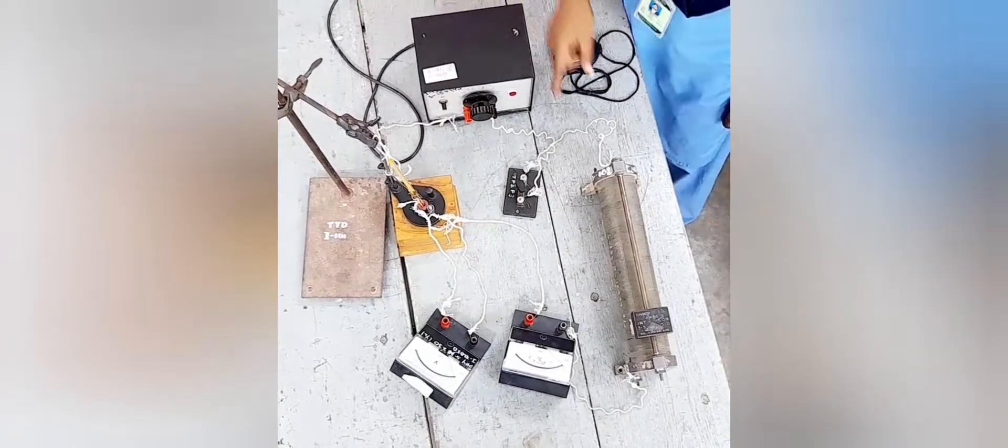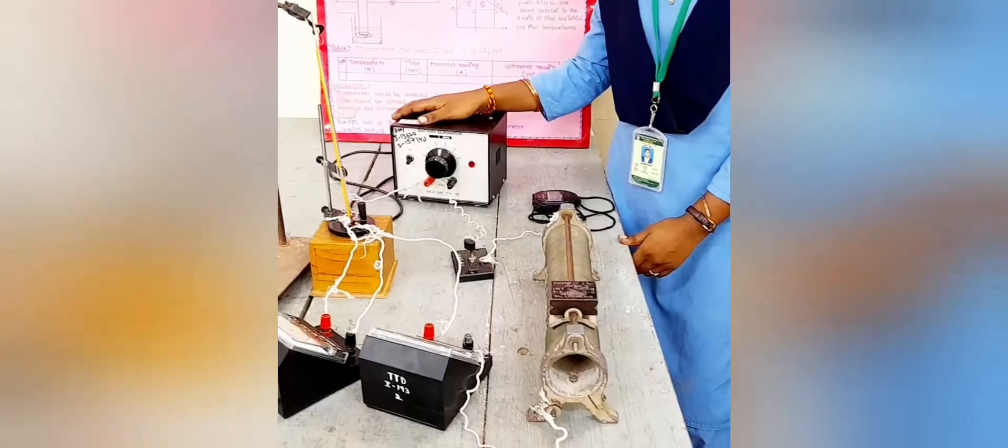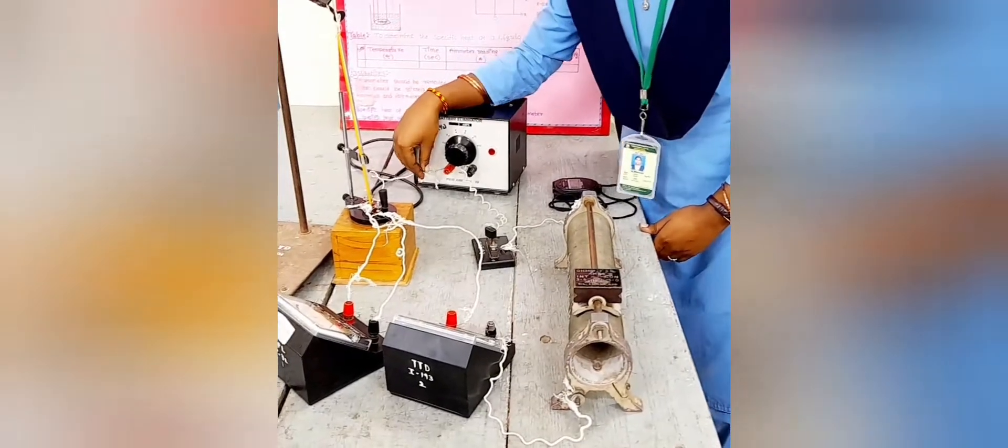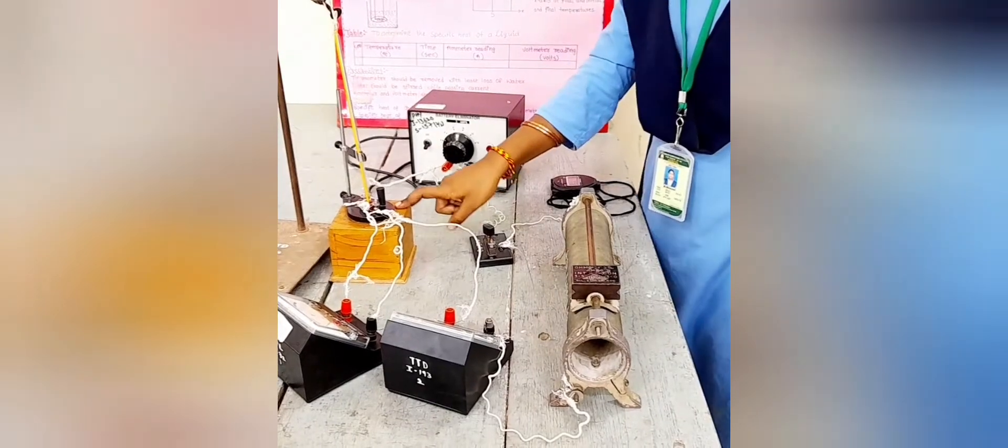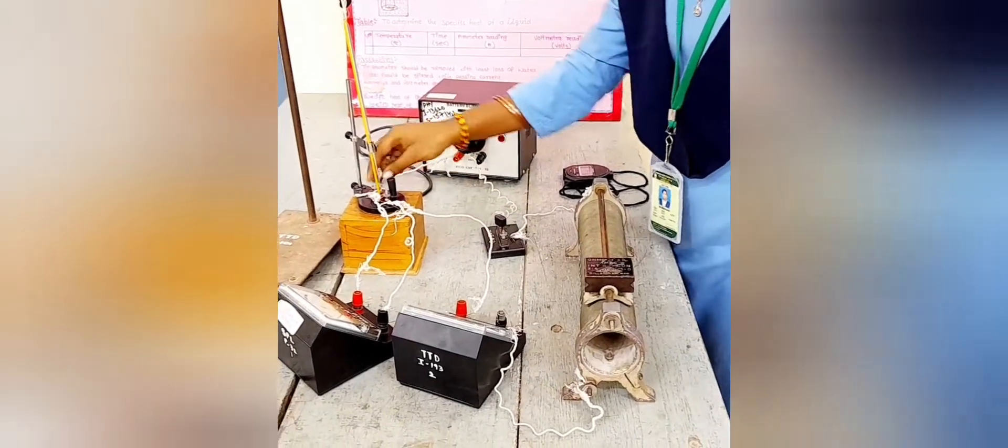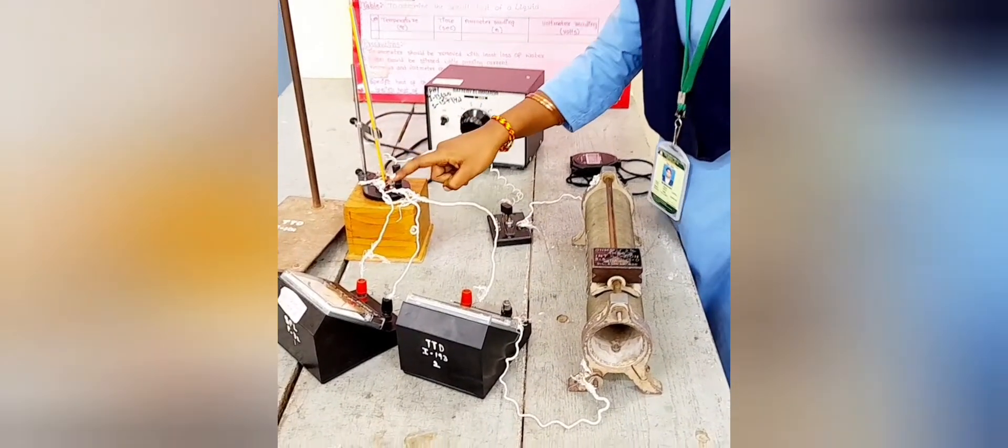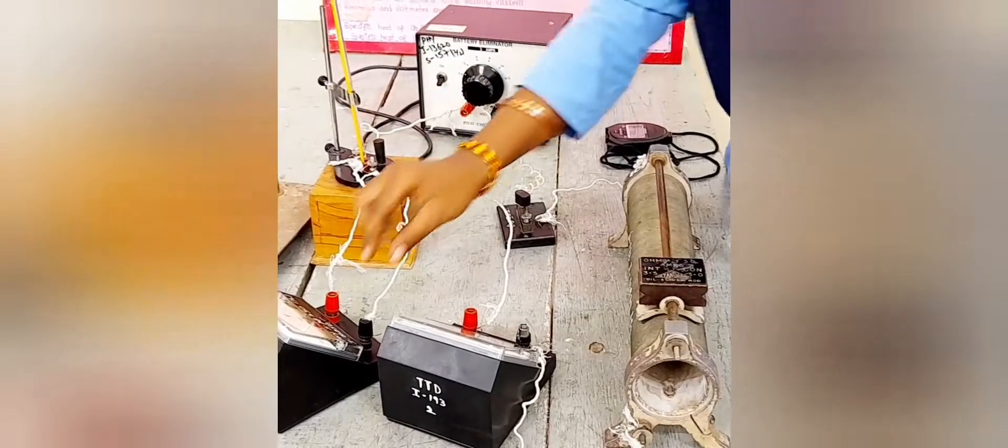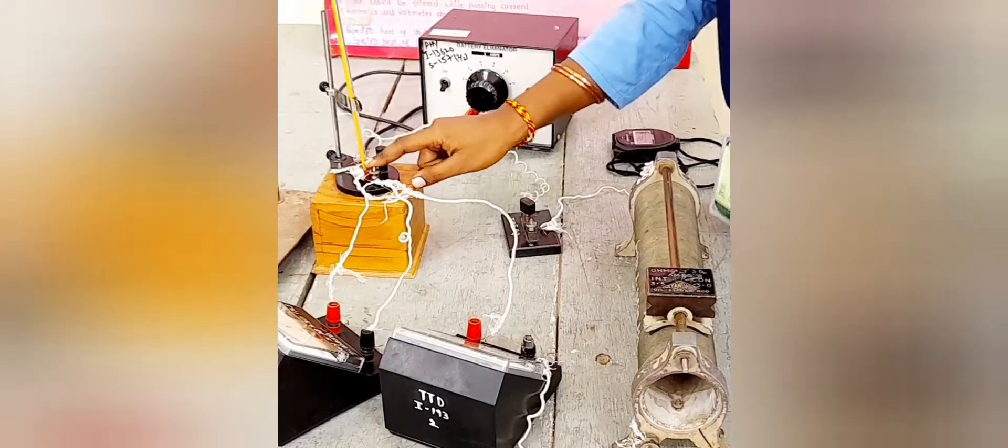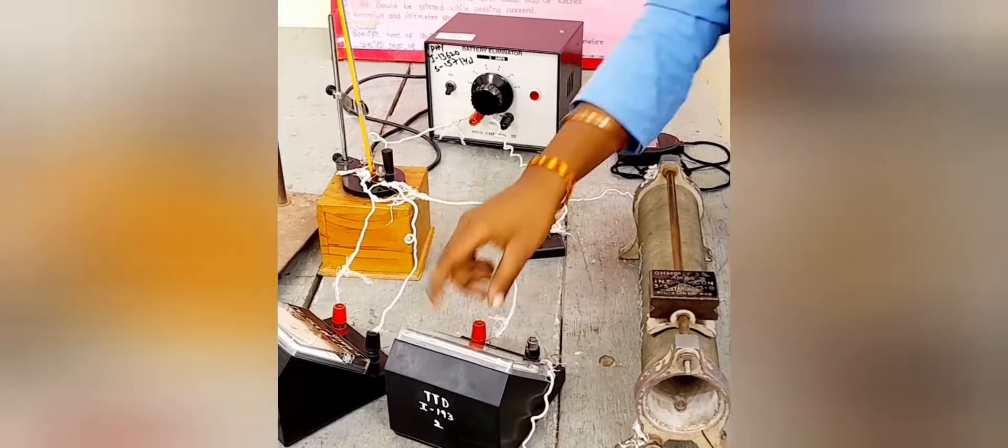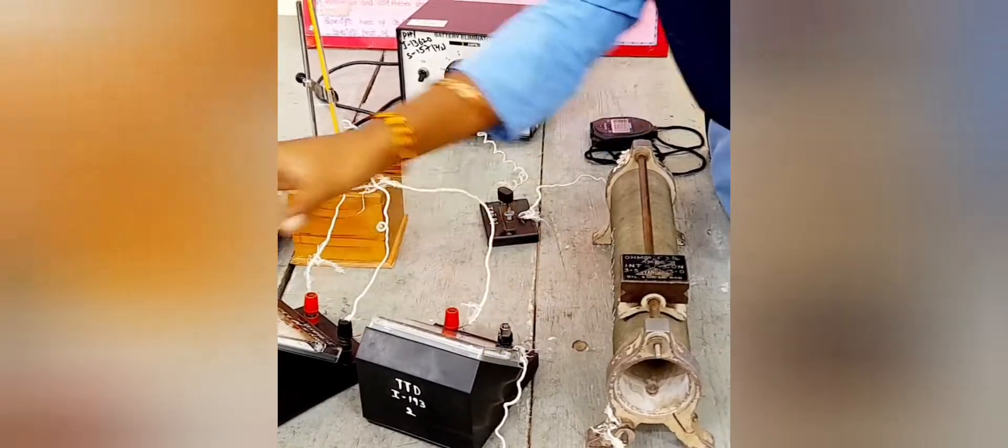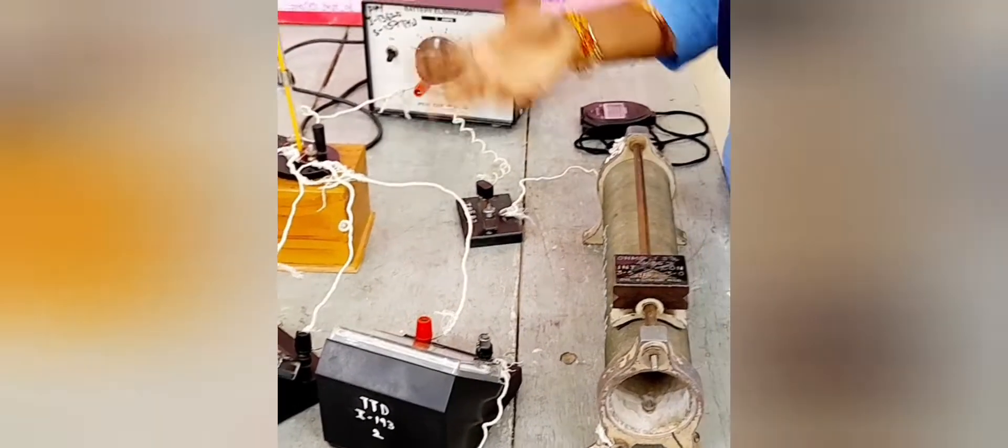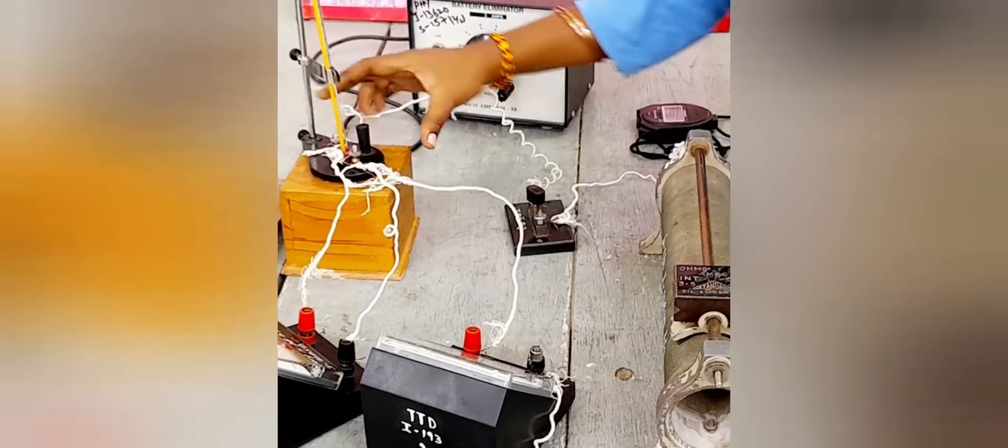Also plug the key, battery eliminator to calorimeter connection. The calorimeter has S1 and S2 keys. When S1 to voltmeter are connected and voltmeter negative to S2 and also S2 to the ammeter. Ammeter and voltmeter are connected in series. Voltmeter and the calorimeter are connected in parallel connection.